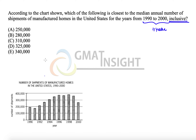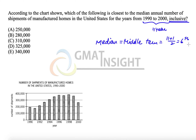The median is always the middle term when the terms are arranged in increasing order. So what we have to do here is find the middle term. When we have 11 terms, the middle term will be equal to (11 + 1) divided by 2, which means the sixth term.